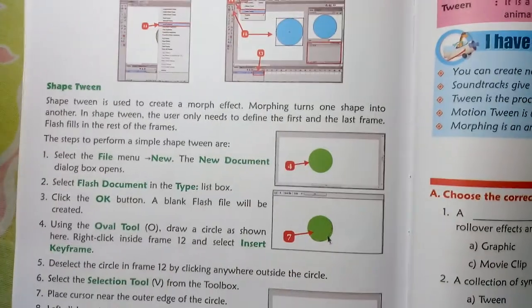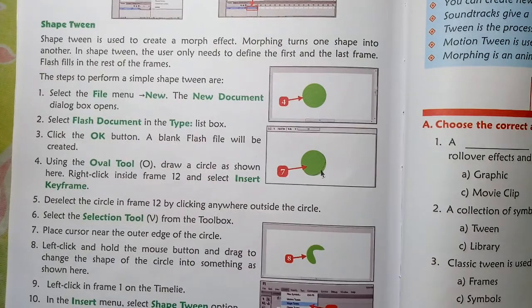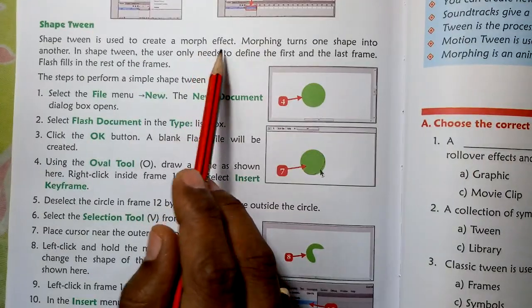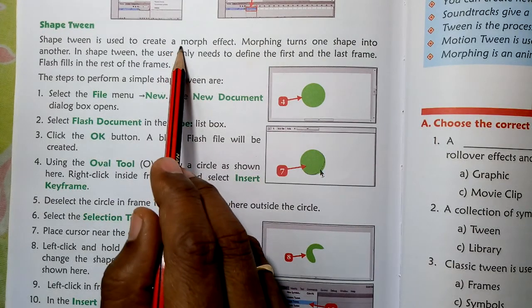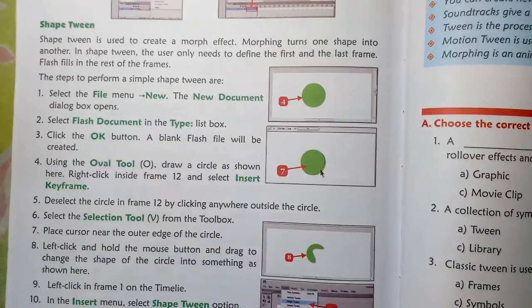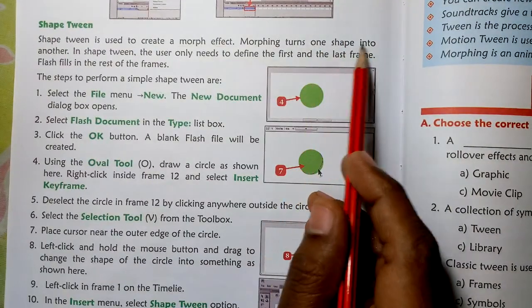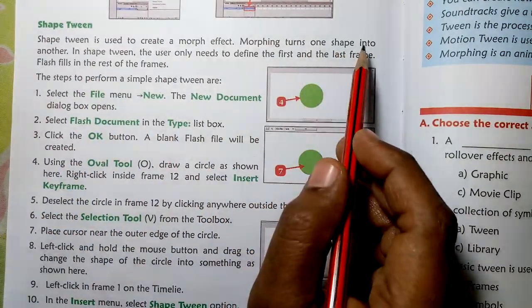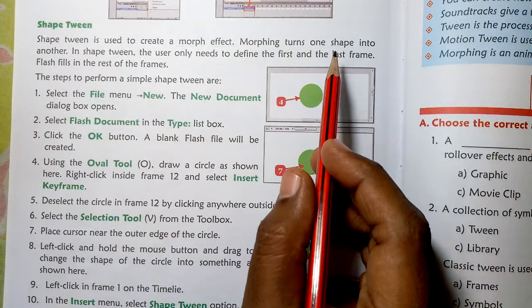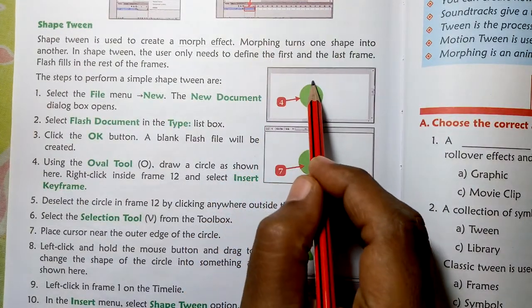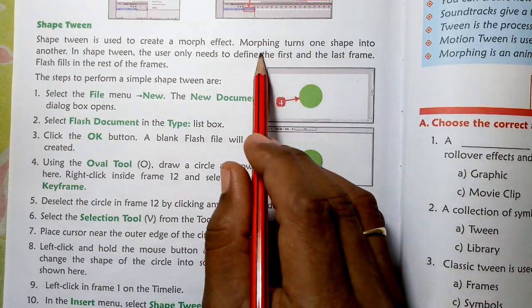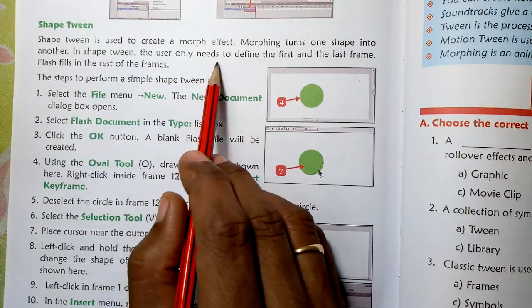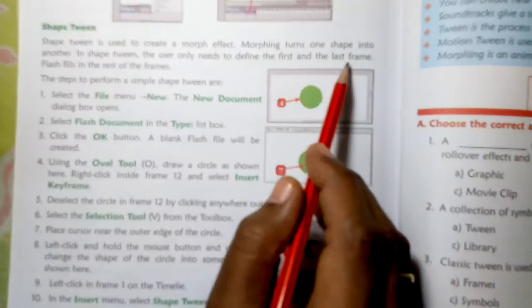Shape tween is used to create a morph effect. What is the shape tween? It is a morph effect. Morphing turns one shape into another — when one shape changes into another shape, for example a square changes into a circle, we call it morphing. In shape tween, the user only needs to define the first and the last frame.